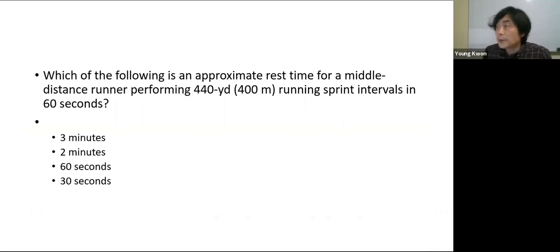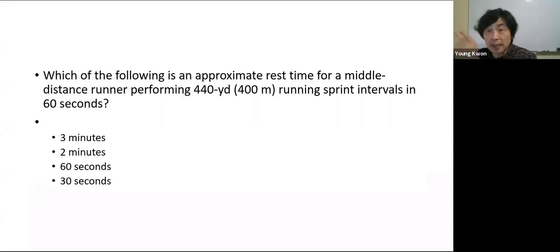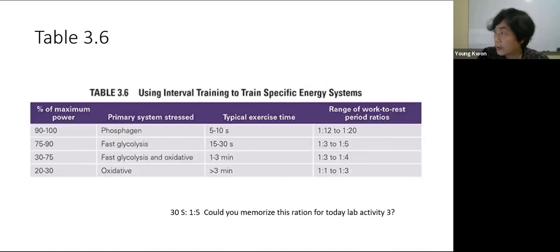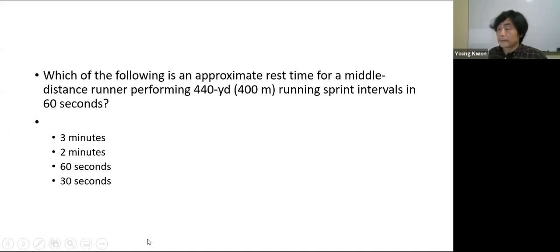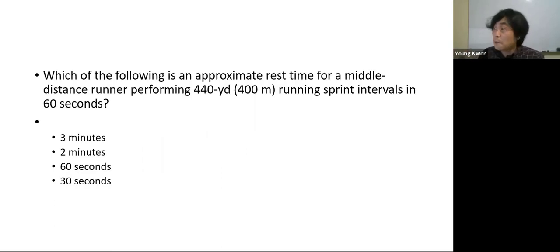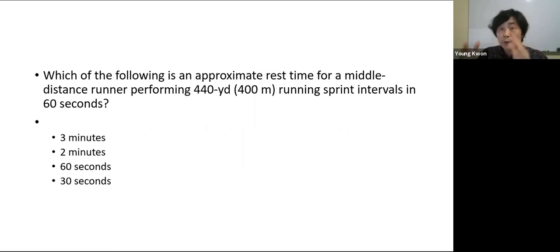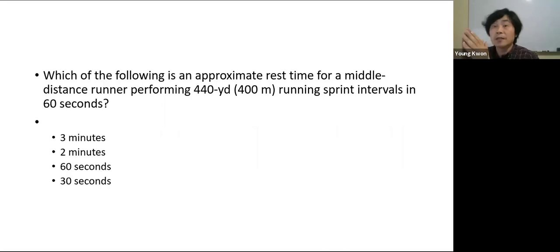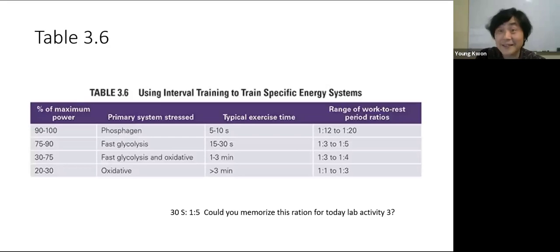Practice question: 'What is the appropriate resting time for a middle-distance runner performing 400-meter sprint intervals?' A 400-meter run takes approximately 60 seconds — using the 1:3 work-to-rest ratio, the recovery time is 3 minutes. So 1 minute of exercise, 3 minutes of rest. For example, if Erica is a soccer coach using 1-minute running intervals with 3-minute recovery between sets, that is appropriate reference-based design.